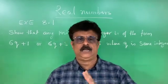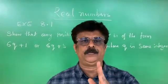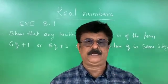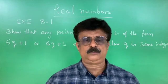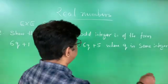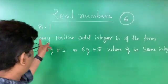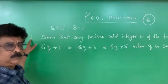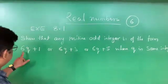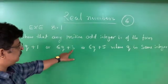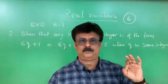We are in a chapter called Real Numbers and we are solving the first exercise, 8.1. We already completed the first main question — finding the HCF of any two numbers using Euclid's division algorithm. Today is Real Numbers class number six and we continue solving Exercise 8.1. The second question is to show that any positive odd integer is in the form of 6q+1, 6q+3, or 6q+5, where q is some integer. These are logical proof problems.